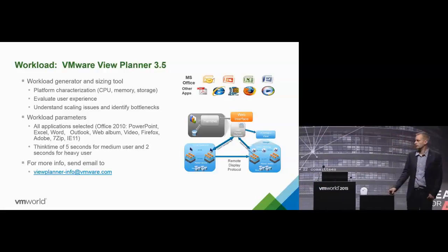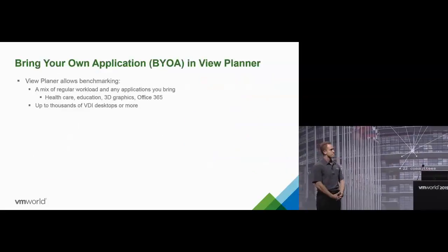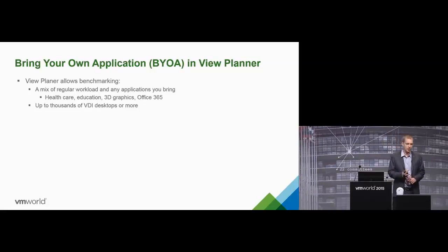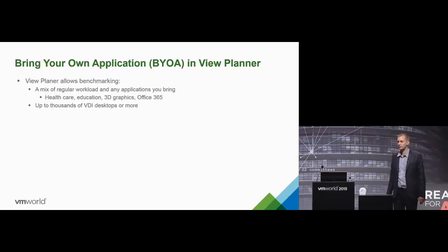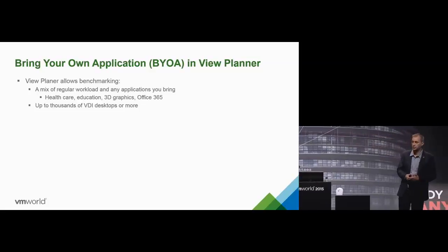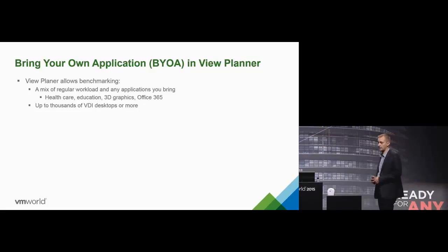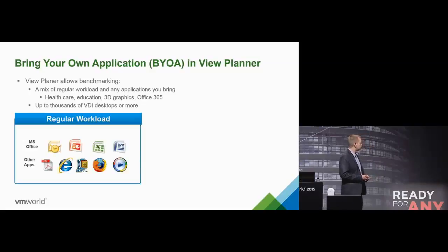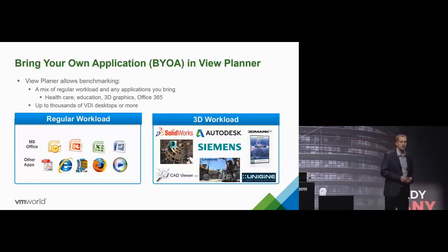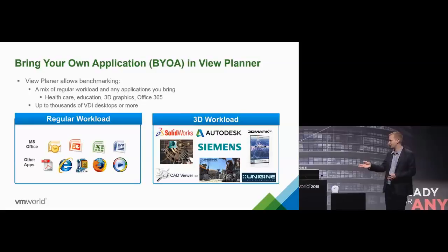Bring your own application in View Planner. The standard apps include Firefox, Office apps, Outlook, Adobe Acrobat, and video files for playback. For benchmarking 3D applications with RDSH, we can add 3D applications to that workload — View Planner absolutely supports that. The 3D workload uses the Unigine engine. The first time I set up VDGA, I ran the Unigine heaven benchmark on Linux and it looks really cool for demo purposes. Beyond that there's Autodesk, Siemens, SolidWorks, and more — you're not limited to those.